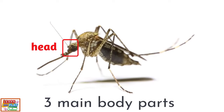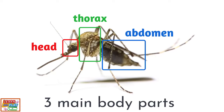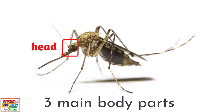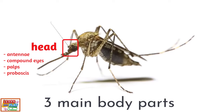which are the head, thorax and abdomen. The head of a mosquito is where you will find organs such as antennae, compound eyes, palps and the proboscis. All of these organs work together to help mosquitoes to smell, detect movement and to feed.